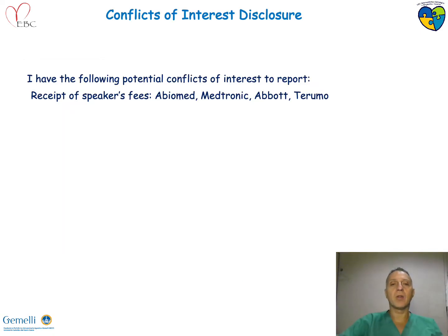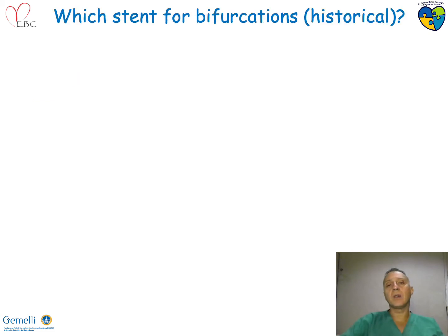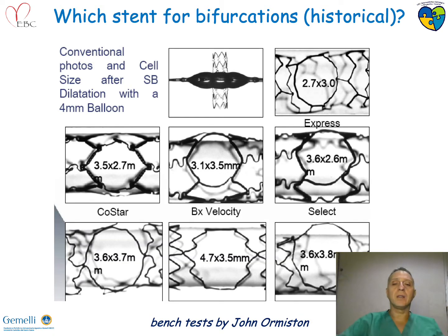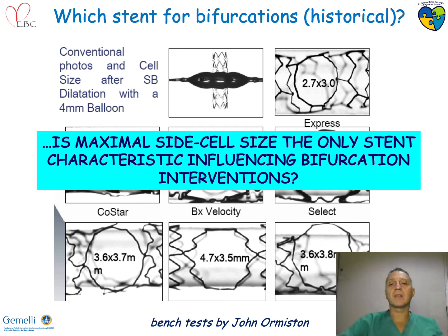These are my conflicts of interest disclosure. I would like to start by questioning which stent is ideal for bifurcations. On a historical perspective, these are John Orme Easton's bench tests. The way to compare the suitability of different stents was just to perform ballooning across them. So, is maximum side cell size the only stent characteristic influencing bifurcation interventions?